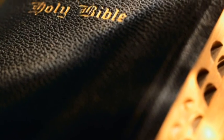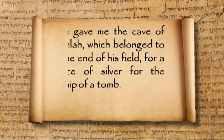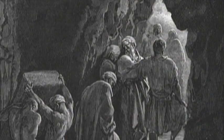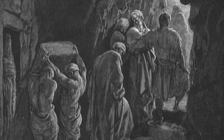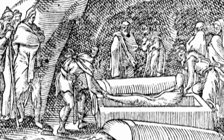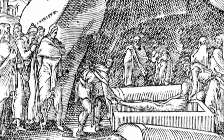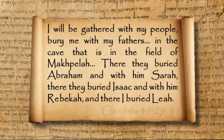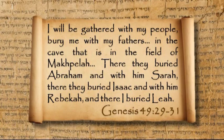The first mention of such a tomb is found in the book of Genesis: 'He gave me the cave of Machpelah, which belonged to him, at the end of his field, for a full price of silver.' For the ownership of a tomb, Abraham purchases this cave to bury his wife Sarah, and later Abraham himself was buried in it by his sons Isaac and Ishmael. Before Abraham's grandson Jacob dies, he says to his children: 'I will be gathered with my people; bury me with my fathers in the cave that is in the field of Machpelah. There they buried Abraham and with him Sarah, there they buried Isaac and with him Rebekah, and there I buried Leah.'